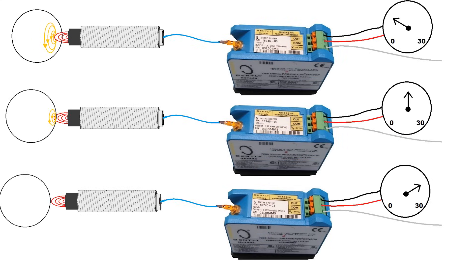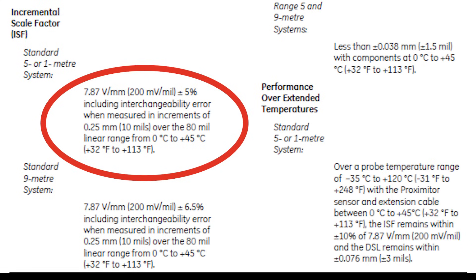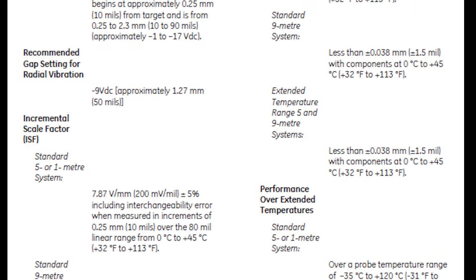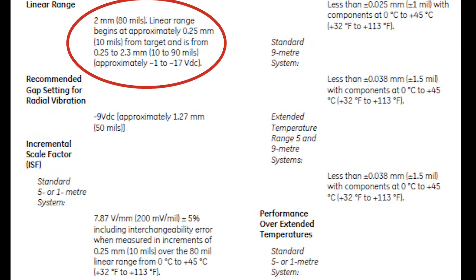This relationship between voltage and distance is defined as the incremental scale factor of the instrument. The most common ISF is 0.2 volts or 200 millivolts for every 1 mil of travel. This ratio only applies to a specified range of detection.